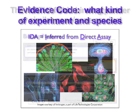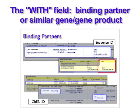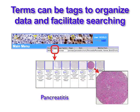In some situations, additional information such as data about a binding partner, or the gene or gene product on which the original experiments were done, is needed. In these cases, the data is either shown as part of the evidence code, or it's included in a separate With field. In addition to formal annotations such as those used for the Gene Ontology, ontology terms can be used as tags to organize data and facilitate searching.